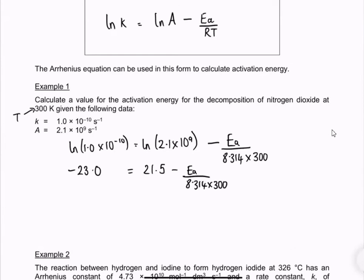Now I'm going to do a bit of algebra to rearrange that. I'm going to take away minus 21.5 from each side. So that's my next step. I'm going to get minus 44.5 because I was minus 23 and I have minus 21.5 equals minus Ea over 8.314 times 300.